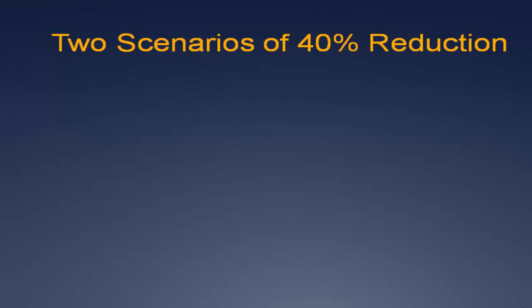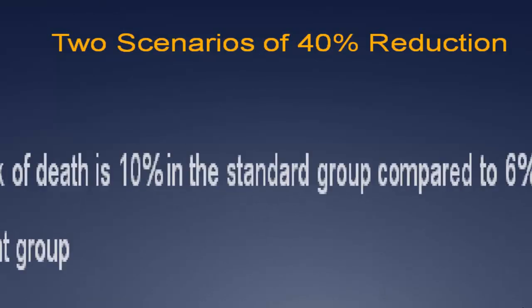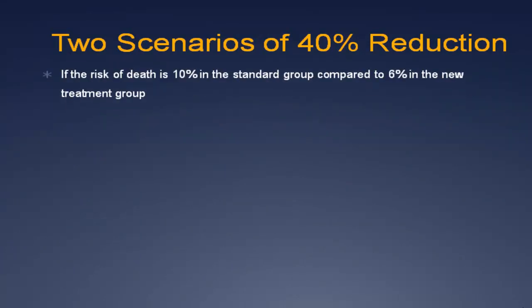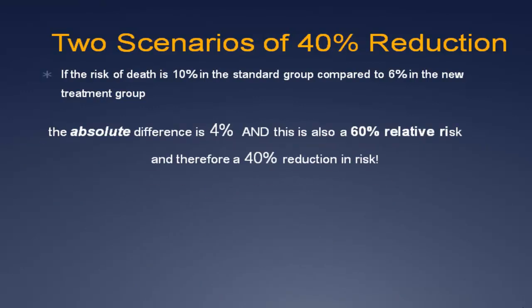Let's do it again to emphasize the learning points. If the risk of death is 10% in the standard group compared to 6% in the new treatment group, the difference is 4%. But that's a 40% reduction in risk, and it's also a 60% relative risk — also called the risk ratio. The 4% is the absolute risk reduction, the 40% reduction in risk is the relative risk reduction, and the 60% is the relative risk or risk ratio. Any of these could be expressed as a percentage only, but unless you know which of the three statistics it represents, you could be overly enthusiastic about the results.